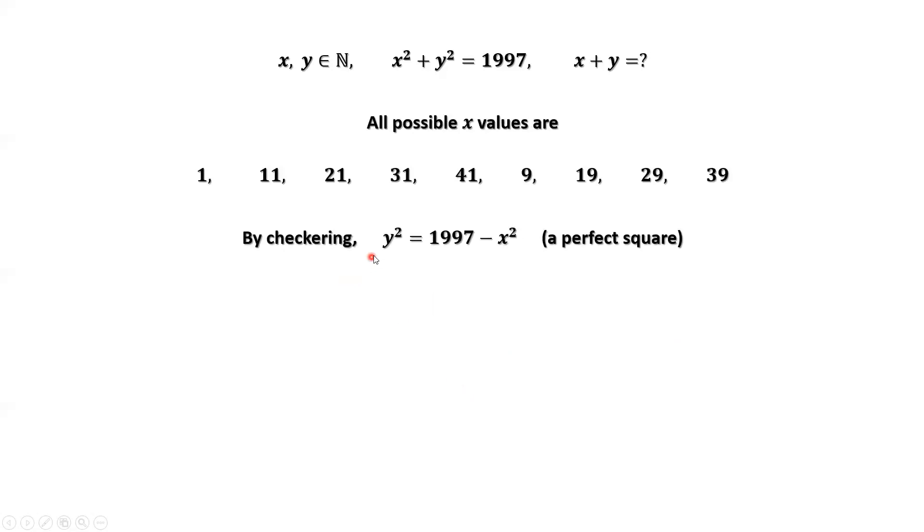We all need to check if y squared equals 1997 minus x squared. Here, both x and y must be positive integers. When we replace x here by these numbers, the answer should be a perfect square. We check one by one. The final answer is x and y equals 29 and 34. This is the only solution satisfying this condition.